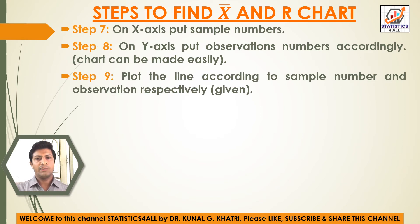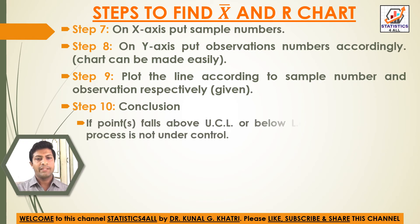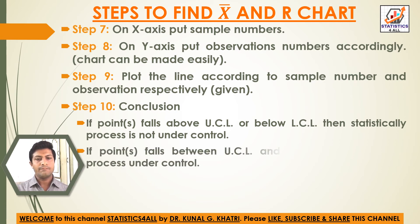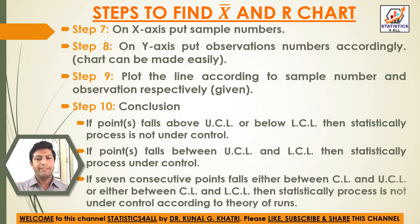Step 9: Plot the line according to sample number and observation respectively, which is given or worked out. Step 10 — Conclusion: If points fall above UCL or below LCL, then statistically the process is not under control. If 7 consecutive points fall either between CL and UCL or between CL and LCL, then statistically the process is not under control, according to the theory of runs.